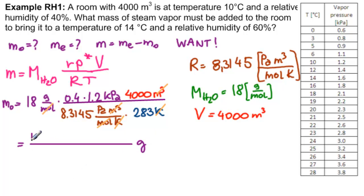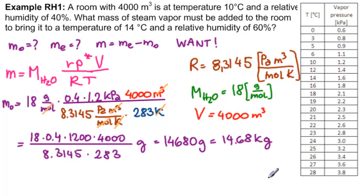So we have 18 times 0.4 times 1,200 times 4,000 divided by 8.3145 times 283. And that gives us 14,680 grams or 14.68 kilograms. Now we need to do the same thing for ME.